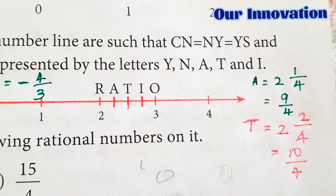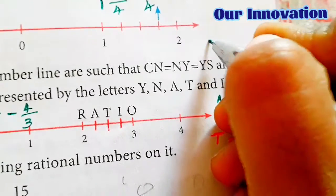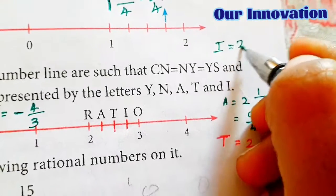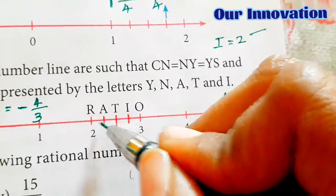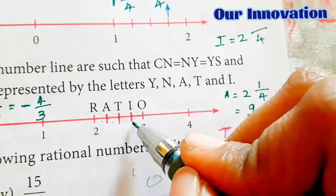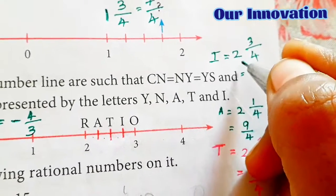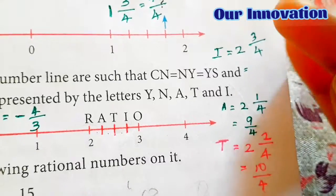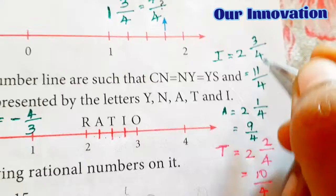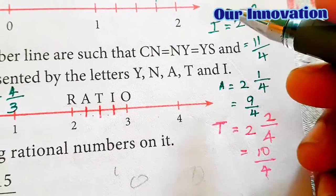Now find I. I is between 2 and 3. Whole number 2, denominator 4. I is at the 3rd position. Converting to improper fraction: 4 twos are 8, plus 3 is 11. So I equals 11 by 4.